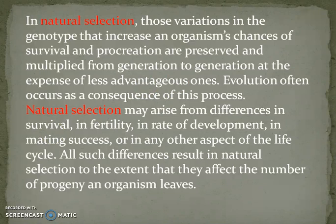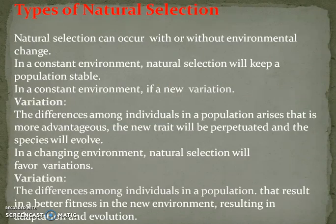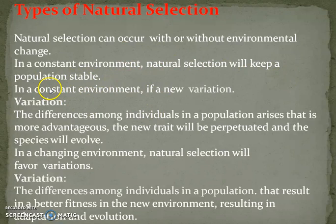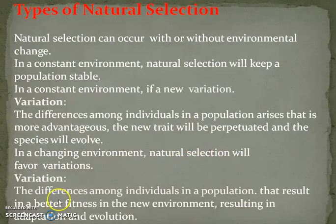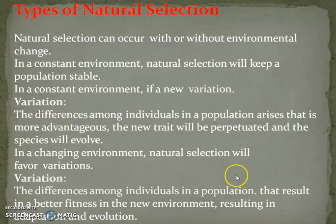Now we discuss the types of natural selection. Natural selection can occur with or without environmental change. In a constant environment, natural selection will keep a population stable. If a new variation arises that is more advantageous, the new trait will be perpetuated and the species will evolve. In a changing environment, natural selection will favour variations that result in better fitness, leading to adaptation and evolution.